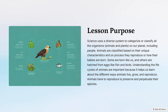Science uses a diverse system to categorize or classify all the organisms, such as animals and plants on our planet, including people. Animals are classified based on their unique characteristics and on how they reproduce or how their babies are born — some are born like us, and others are hatched from eggs like fish and birds. Understanding the life cycles of animals is important because it helps us learn about the different ways animals live, grow, and reproduce. Animals have to reproduce to preserve and perpetuate their species.